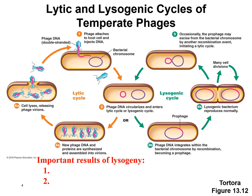If we had a temperate bacteriophage, it would bind to its specific receptor on the bacterial cell and inject its DNA, but instead of doing the lytic cycle, it would do the lysogenic cycle. It inserts the viral DNA into the bacterial cell — that viral DNA is called the prophage, and the bacterial cell itself is called the lysogen. That prophage stays in the bacterial chromosome, and when the bacterial cell divides, it gets copied along with the rest of the chromosome and passed on to the daughter cells, remaining there as long as the environment is good.